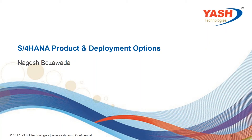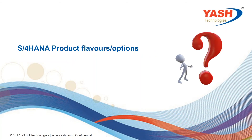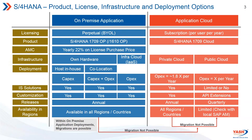Let's discuss the product and the flavors and options. This slide captures the entire gamut of the product — the license, the possible infrastructure, and the possible deployment options. At the top you can notice the on-premise and cloud flavors of applications. Everything in blue is about on-premise applications, everything in red on the right is the application cloud, and the parameters are shown on the extreme left in a mustard or gold color.